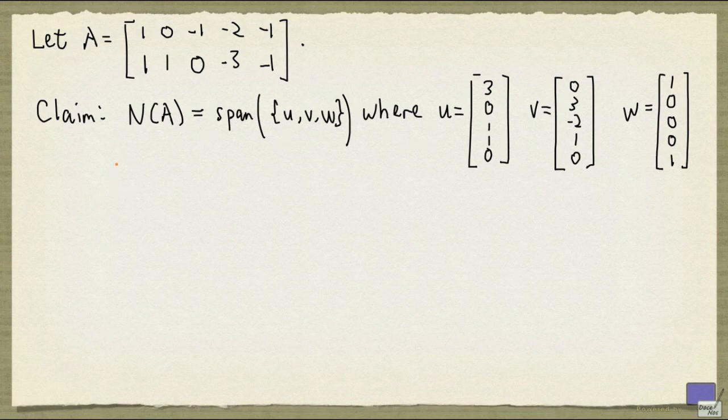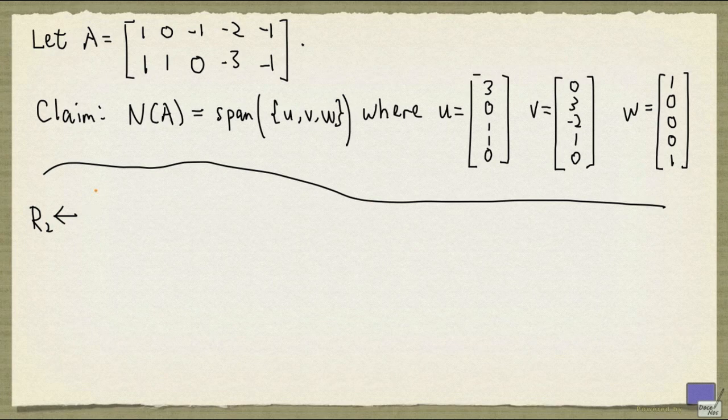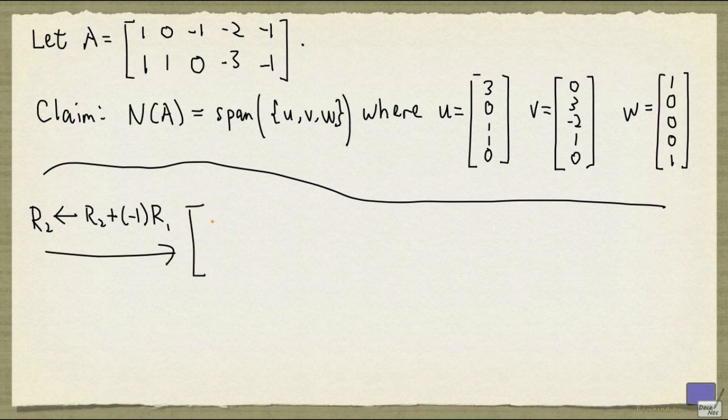Remember that we can find a description of N(A) by using row reduction. So I'm going to row reduce A. I'm going to add minus 1 of the first row to the second row, and that will give me this matrix.